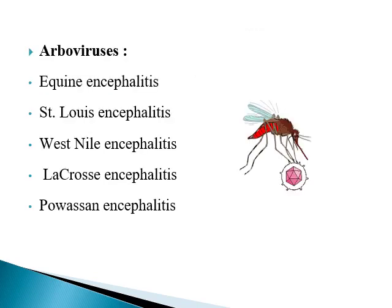We also have another group of viruses called arboviruses, because they are transmitted by arthropods. These include equine encephalitis, St. Louis encephalitis, West Nile encephalitis — which is transmitted by mosquitoes and can be present in Egypt — La Crosse encephalitis, and Powassan encephalitis.